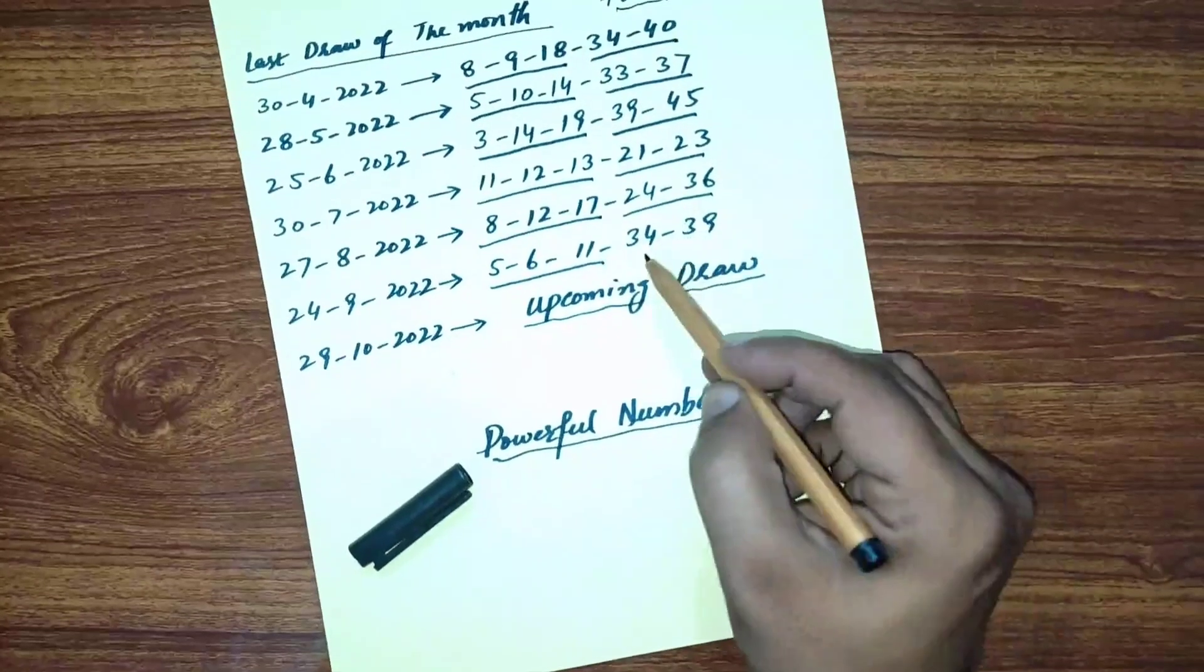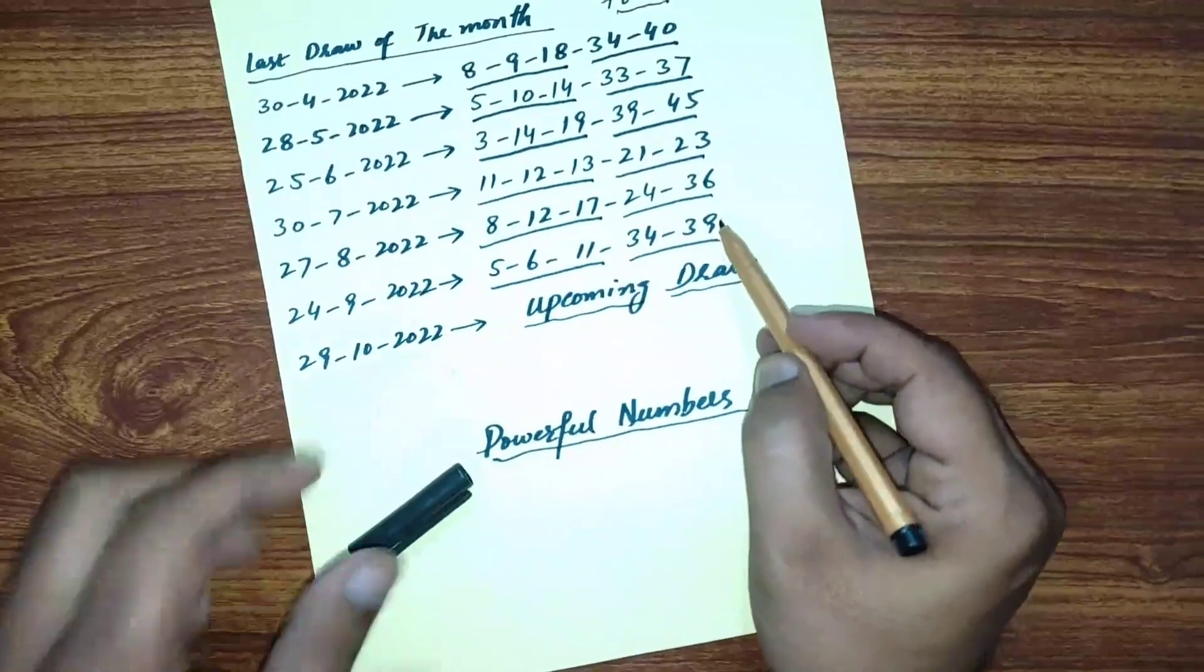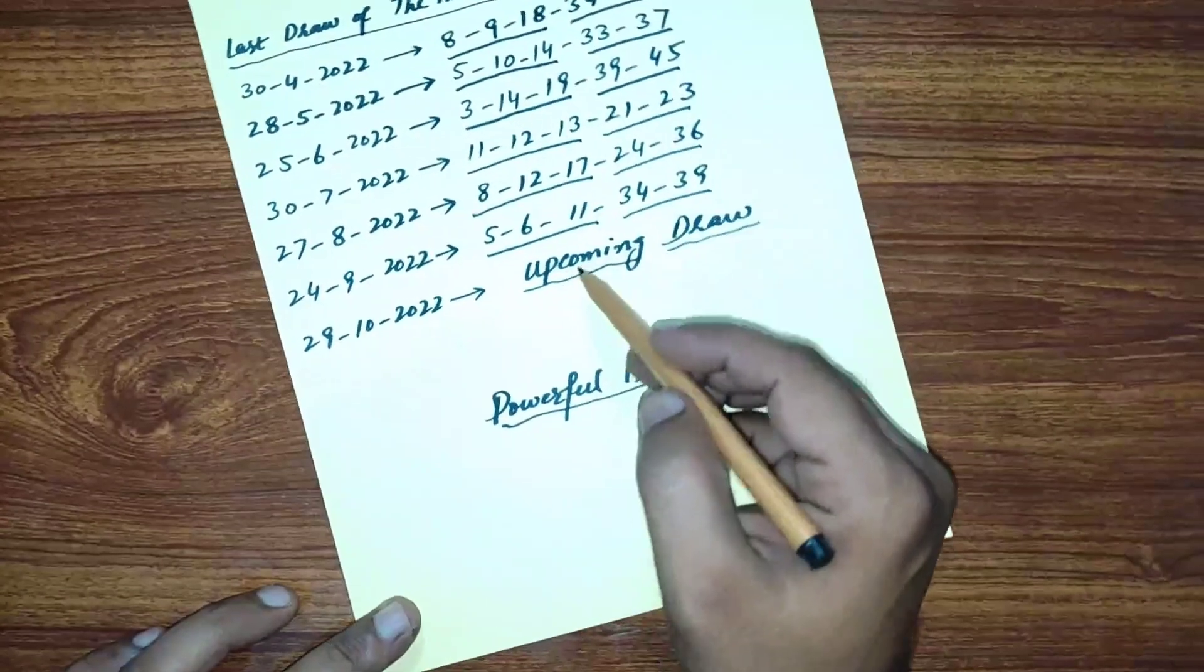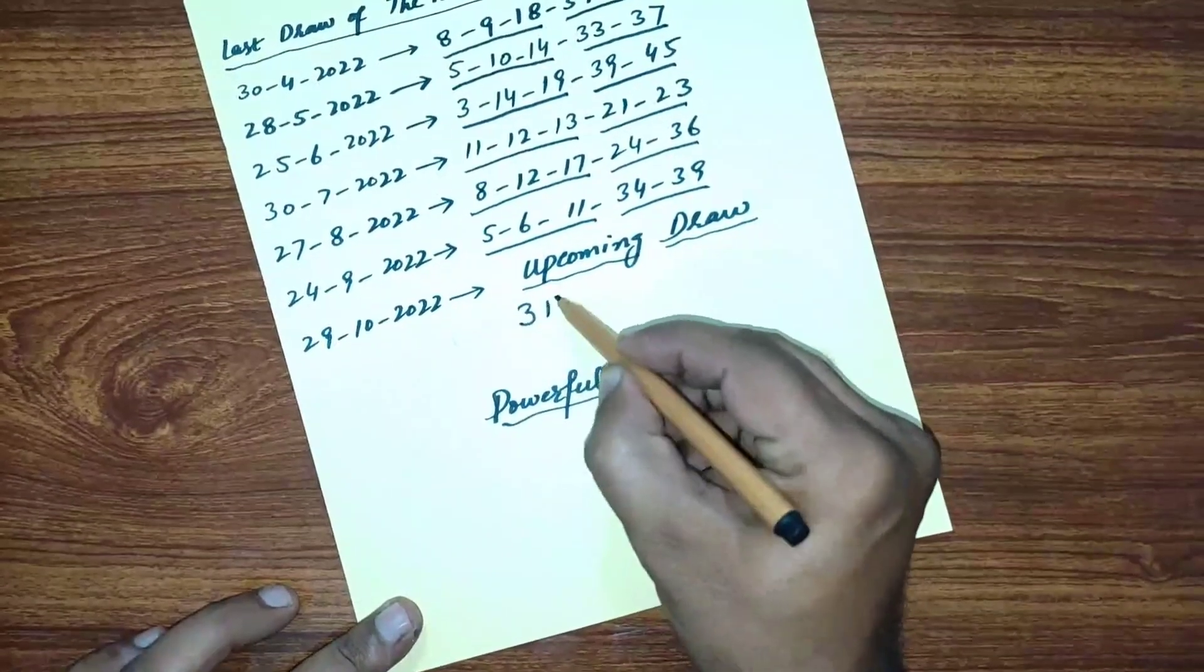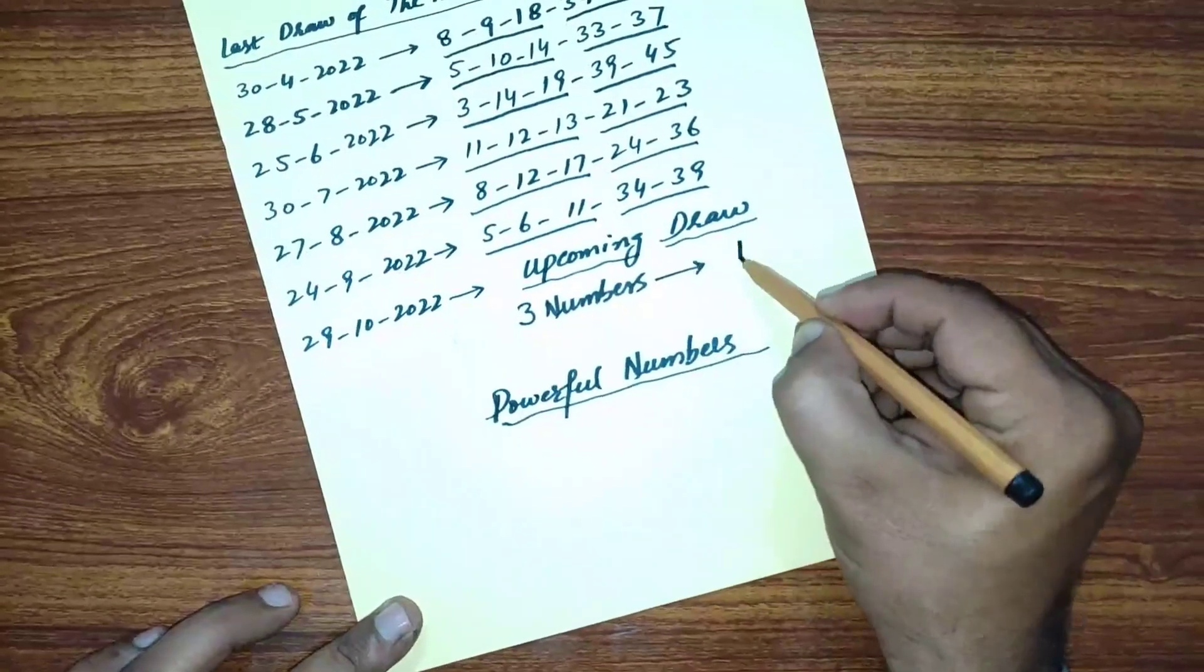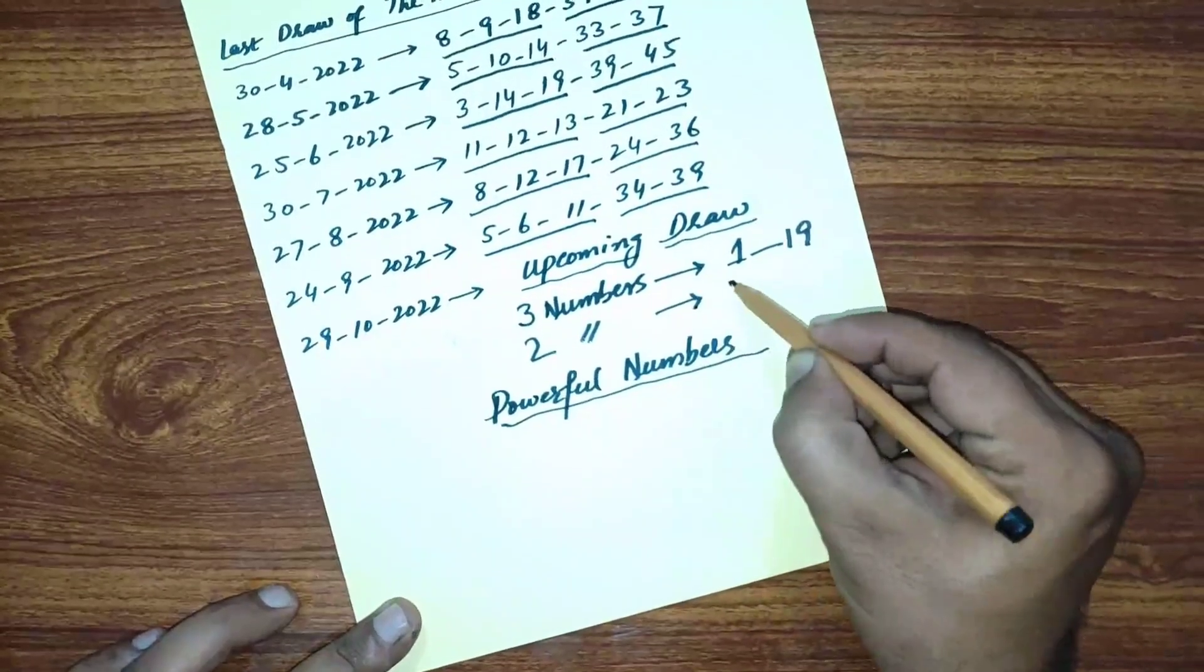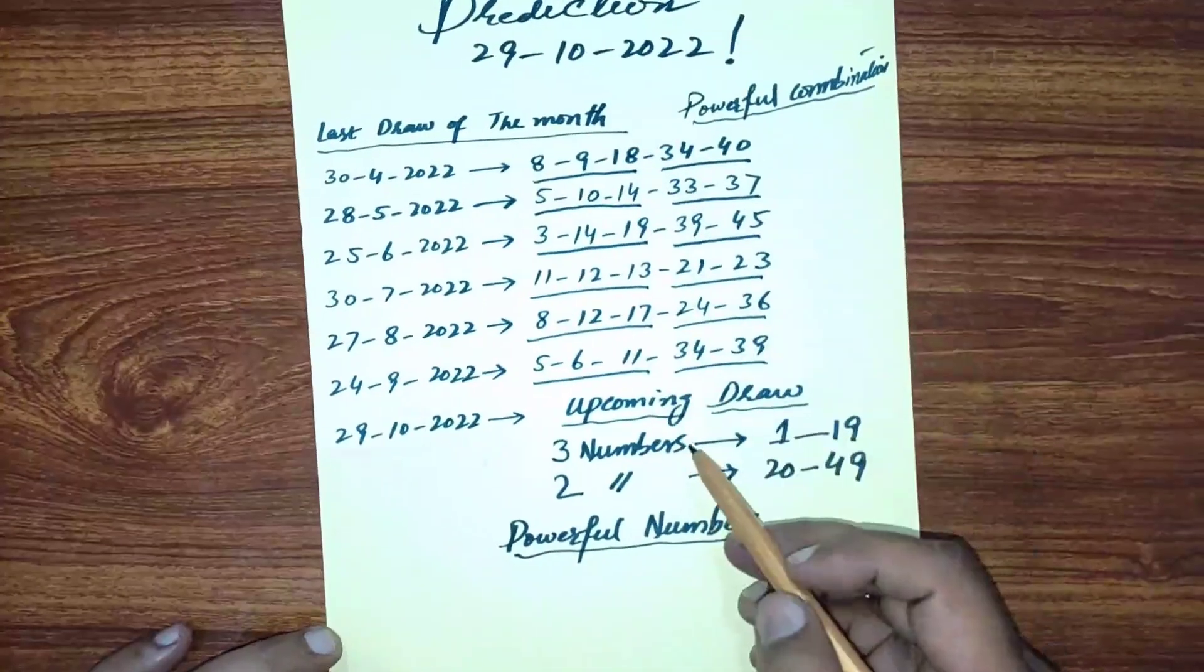And two numbers from 20 to 49. Now this is our upcoming draw, the last draw of October. According to this pattern, you should select three numbers from 1 to 19 and two numbers from 20 to 49.